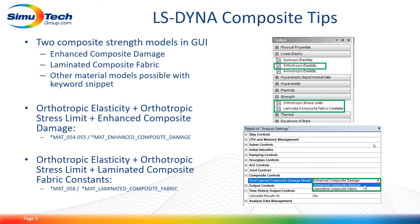If you want to use the mat Laminated Composite Fabric, you'll need to add — in addition to all those things — a Laminate Composite Fabric constants. Again, this is in engineering data, and you'll need to switch this option to Laminated Composite Fabric, again under analysis settings in Mechanical.